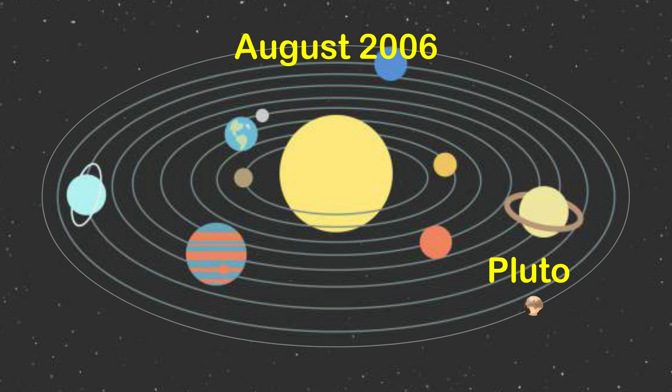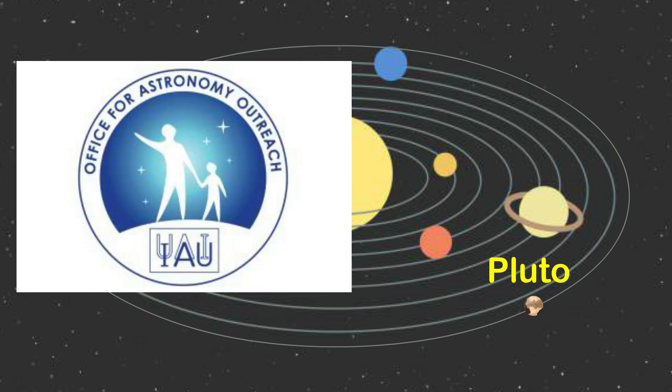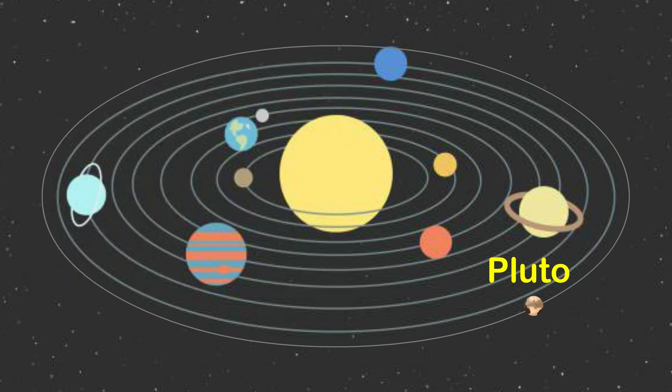Pluto was previously regarded as a planet, but as of August 2006, it was decided in a meeting of the International Astronomical Union that Pluto, like other astronomical objects such as Ceres and 2003 UB313 discovered recently, may be referred to as dwarf planets.